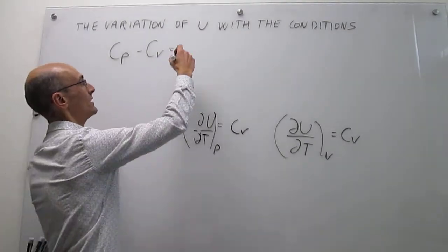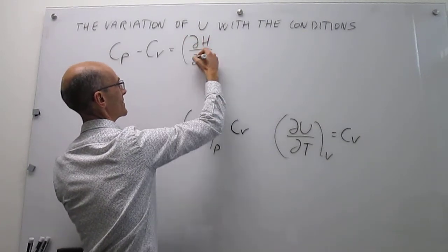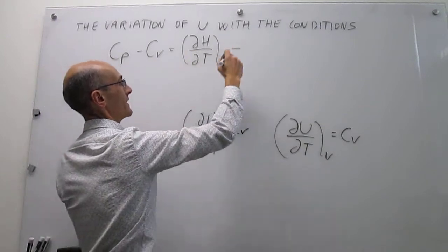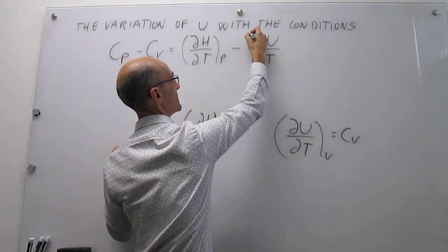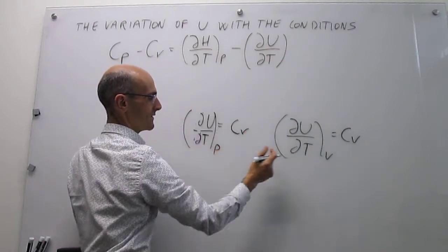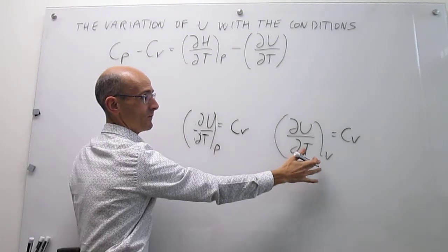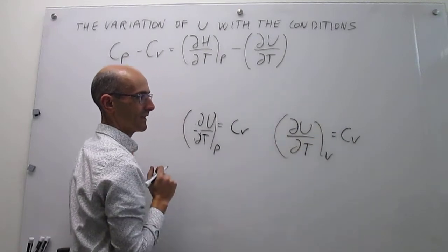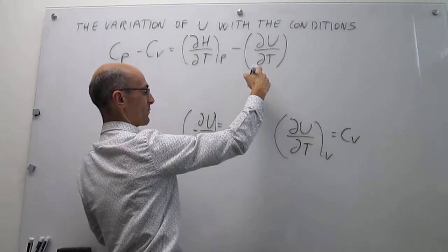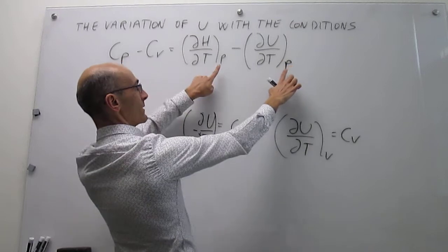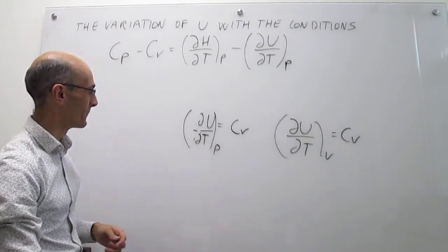The heat capacity at constant pressure is just the variation of enthalpy with respect to temperature at constant pressure. The heat capacity at constant volume is the variation of internal energy with respect to temperature. We can choose either constant volume or constant pressure. Until now we would have used volume, but now we know it is also equal to the variation of internal energy with respect to temperature at constant pressure. This is useful because both first derivatives are now at constant pressure, and we can manipulate them nicely.